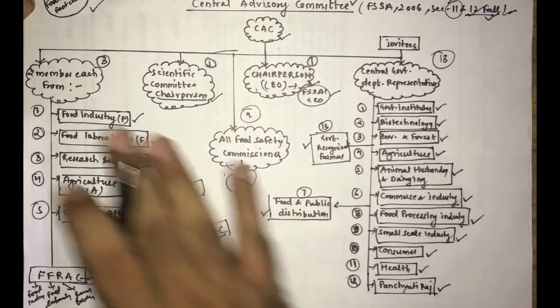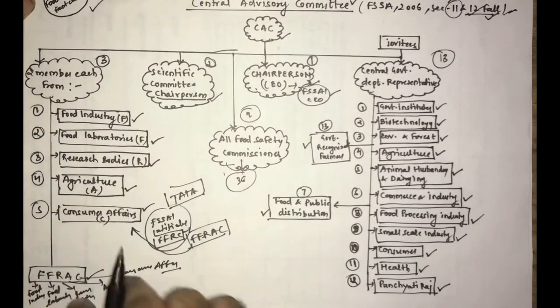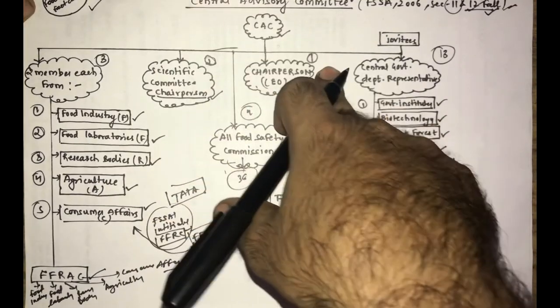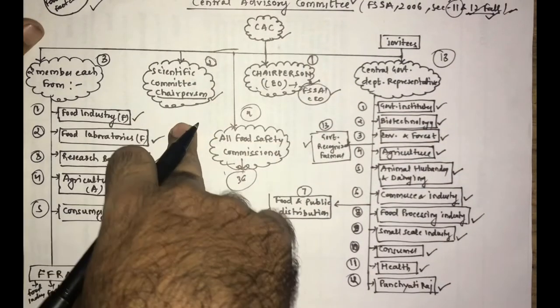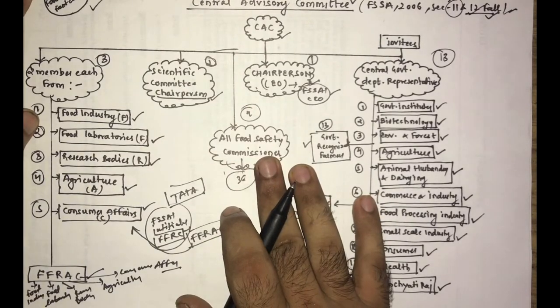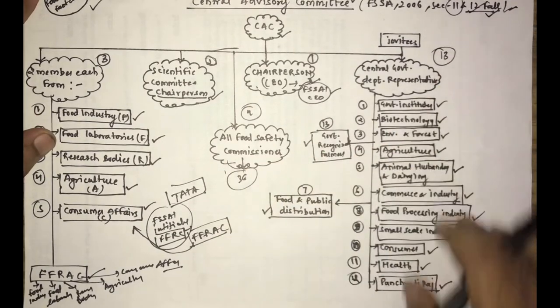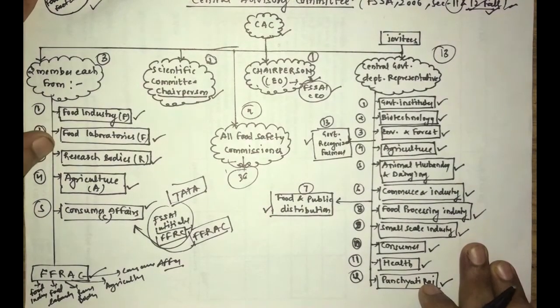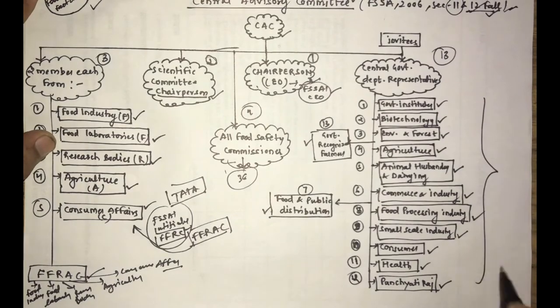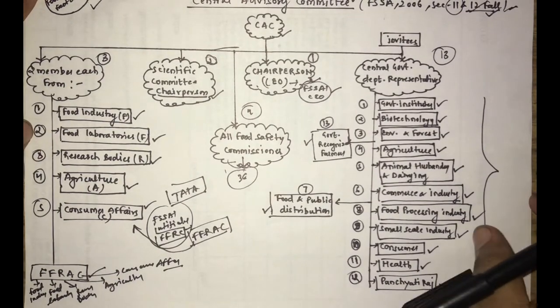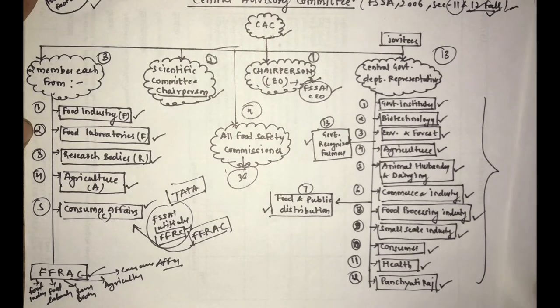Now the challenge comes, let me tell you the trick to remember this. This is the FFRAC, these two are the CEO, the scientific committee, and all the states and all the food safety committees. Now to remember this, I will also tell you a trick for the departments. You have to give a common example, so remember the department.